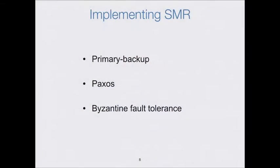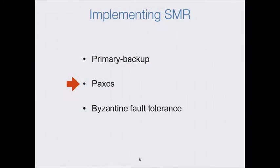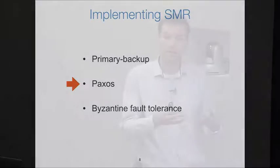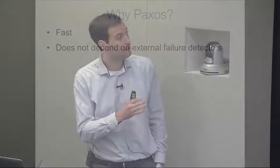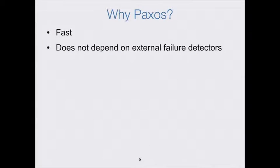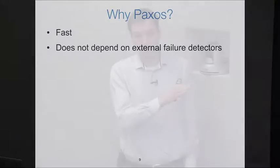There are many ways to implement state machine replication, ranging from simple primary backup protocols to more complex protocols. All the systems I mentioned implement variants of Paxos, and the reason is Paxos has apparently the right trade-off between safety — that is, what kind of failures you can tolerate — and performance. Paxos is as fast or faster than primary backup protocols, and because it does not depend on external failure detectors, it has very high availability.